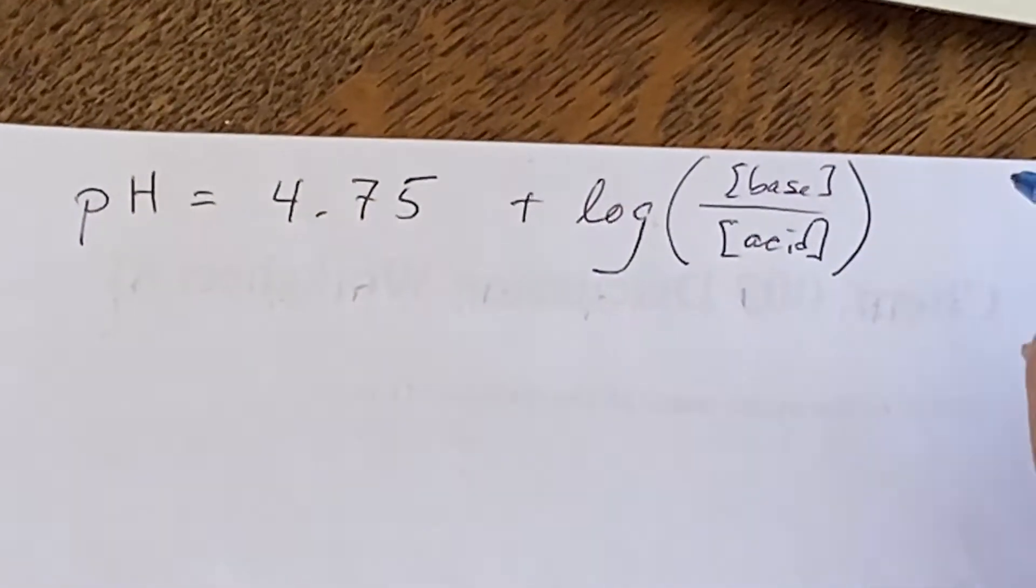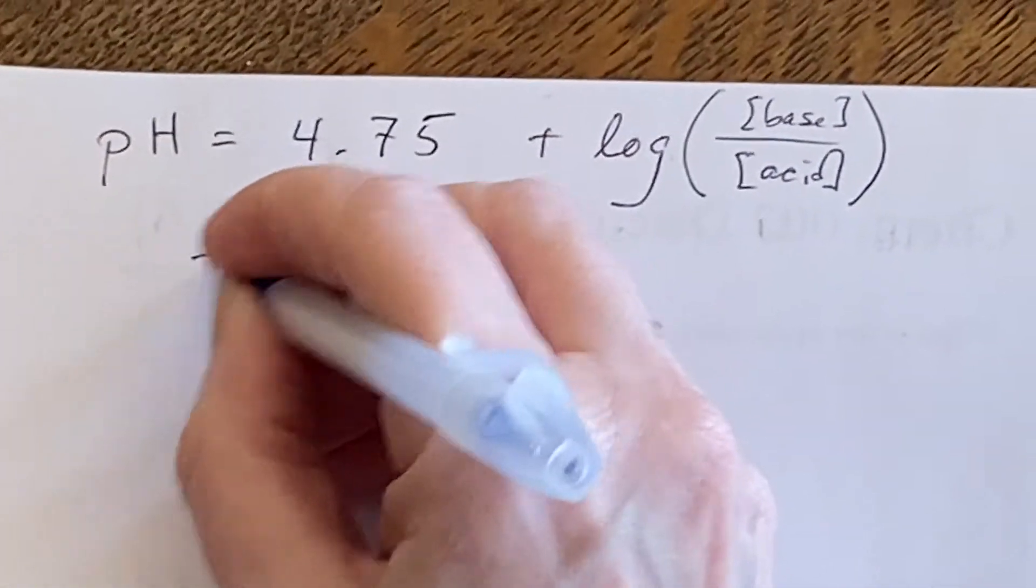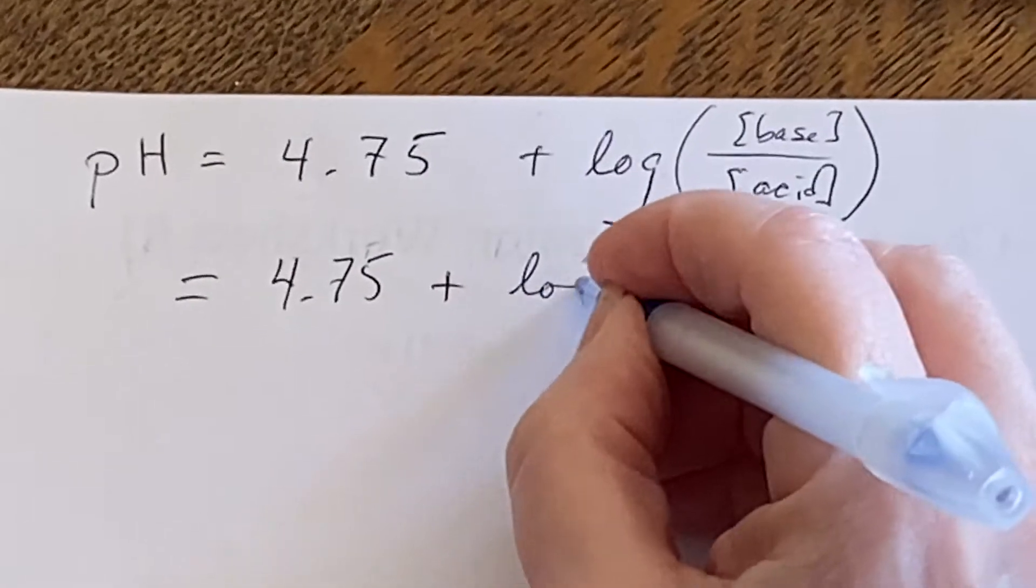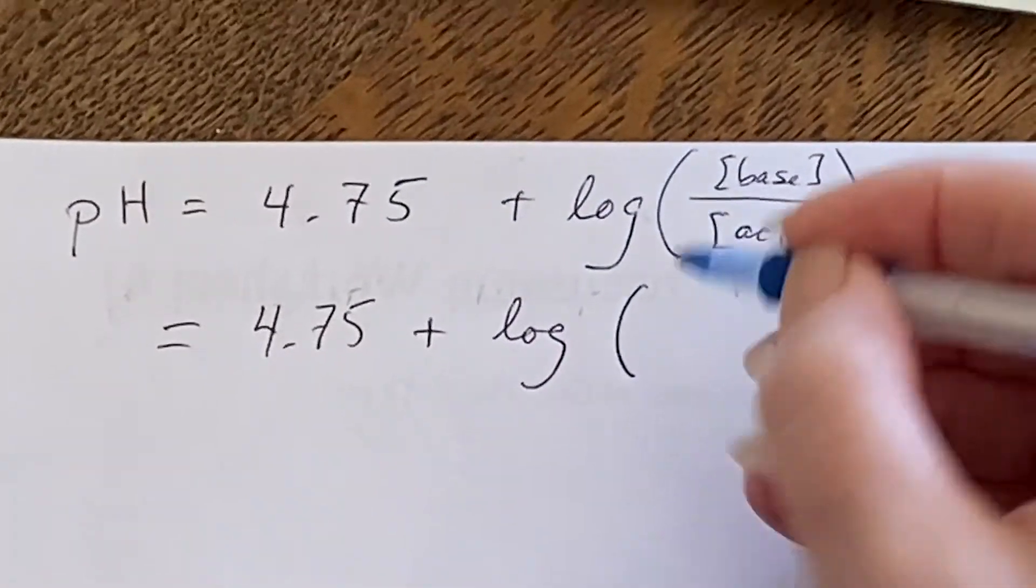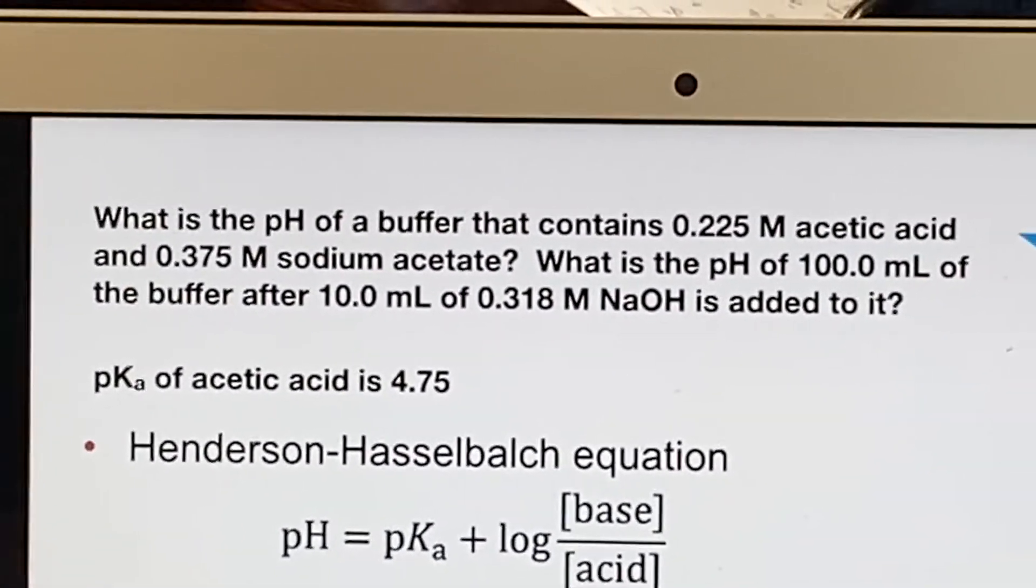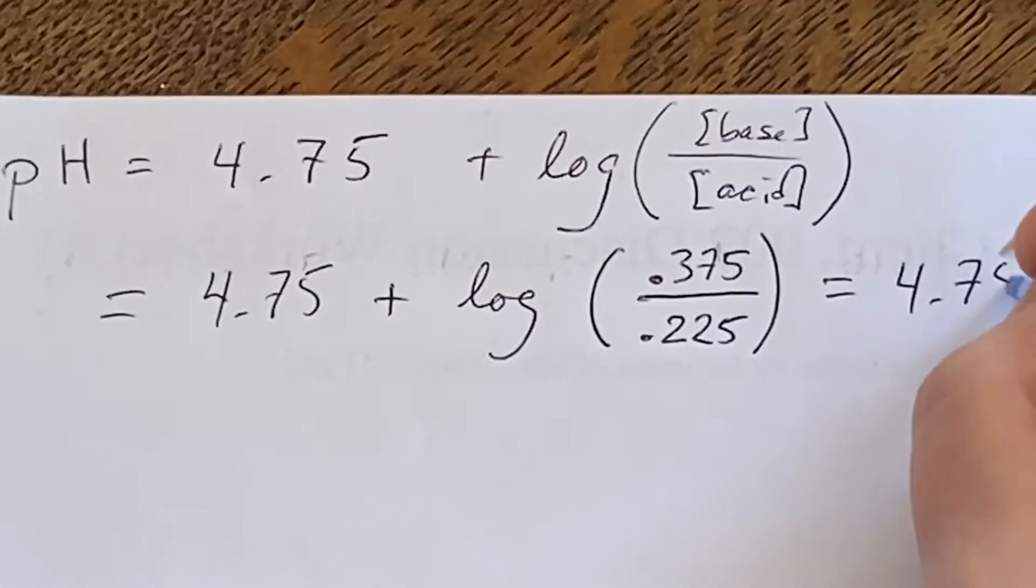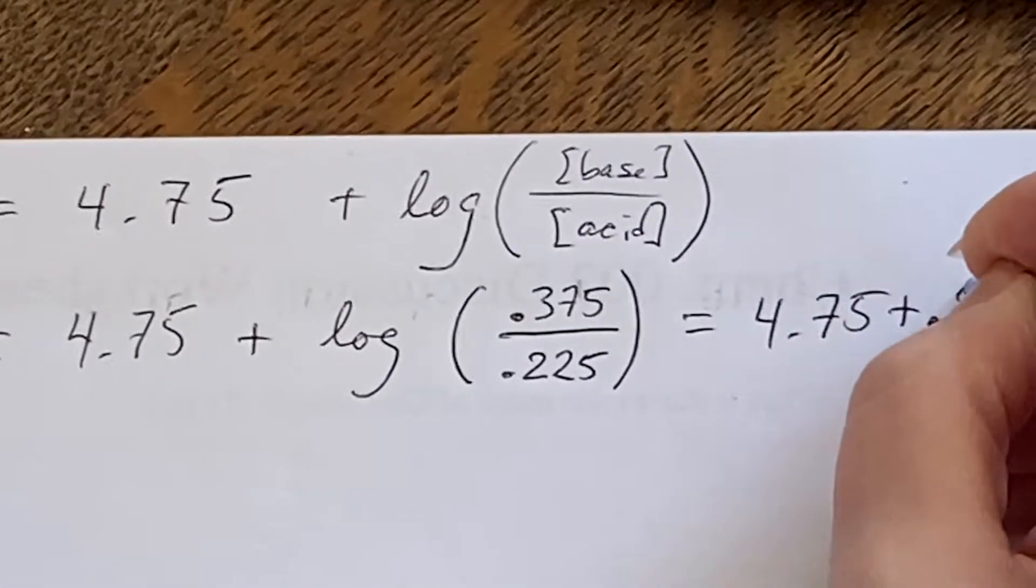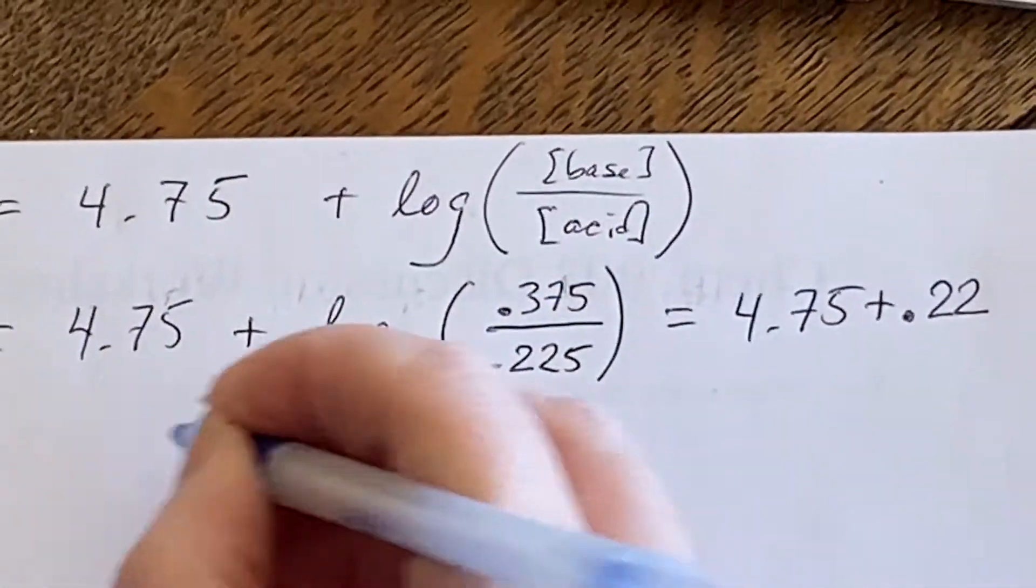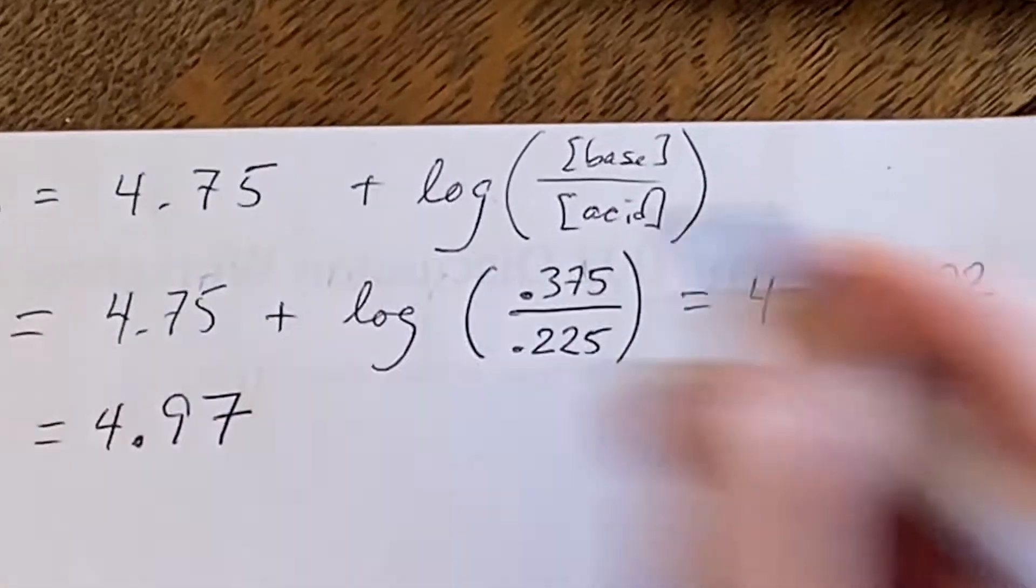That's going to be 4.75 plus the logarithm of the base. The base was the 0.375 over the 0.225 for the acid, which means it's going to be 4.75 plus 0.22. And we will get 4.97 for that.